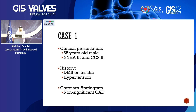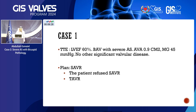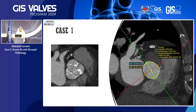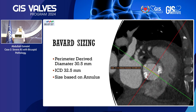Case one is a 65-year-old gentleman who presented with heart failure symptoms, diabetic and hypertensive. Coronary angiogram showed non-significant CAD. Echo showed normal EF, bicuspid anatomy, and severe aortic stenosis. As a young patient, we sent him for surgery, but he absolutely declined and said he would rather be left untreated than have surgery. So we proceeded with TAVI. He has a Sievers type 1 left-right anatomy with an annulus perimeter of 95.9, area of 720, perimeter-derived diameter of 30.5, and ICD 4 mm above the annulus of 32.5.